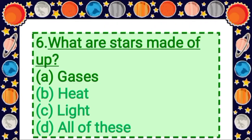Next question: what are stars made up of? Option A: gases, Option B: heat, Option C: light, Option D: all of these. Answer is option A, gases — stars are made up of gases.